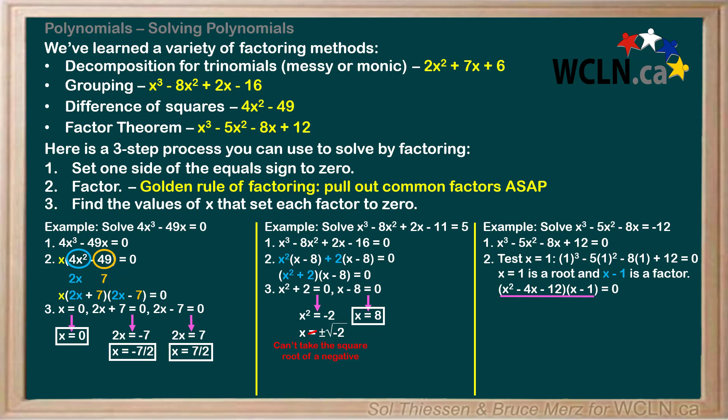Can we further factor this expression? Yes, we can factor the trinomial down to (x + 2)(x - 6), like so. Now the expression is fully factored and we can move on to step 3, where we set each factor to 0 and isolate x.